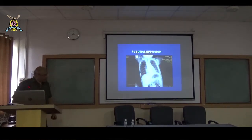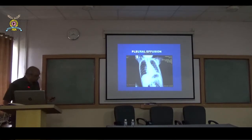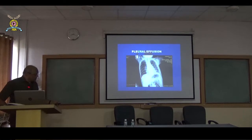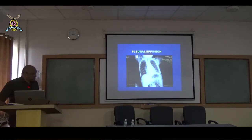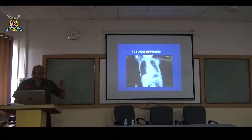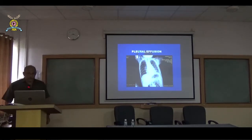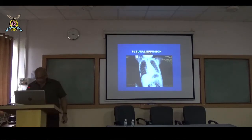Let's see what a pleural effusion looks like. For a small pleural effusion, you can see the cardiophrenic angle seen well on one side, the costophrenic angle seen well on that same side, but on the other side the cardiophrenic angle is blunted. So this is a very small pleural effusion which is seen on the left side.